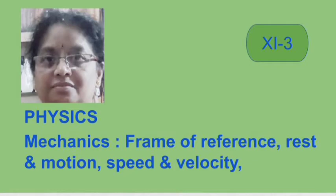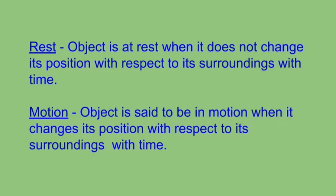When we talk about the term motion, one more term comes into our mind, that is rest. What are the meanings of rest and motion? When we say that an object is at rest, it means it does not change its position with respect to its surroundings with time. And an object is said to be in motion if it changes its position with respect to its surroundings with time. As you already know, rest and motion are relative terms. An object could be at rest with respect to something, and at the same time it could be in motion with respect to some other objects.